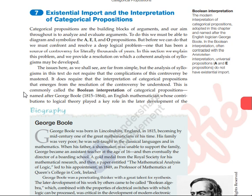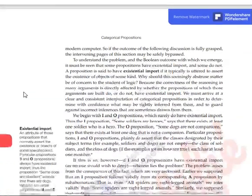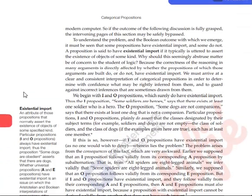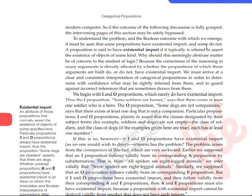This is commonly called the Boolean Interpretation of Categorical Propositions. A proposition is said to have Existential Import if it typically is uttered to assert the existence of objects of some kind. If there are some objects that exist in that class, then there is Existential Import in that proposition.